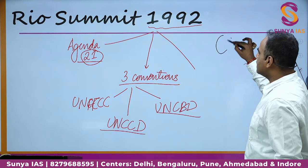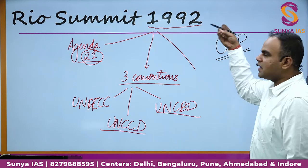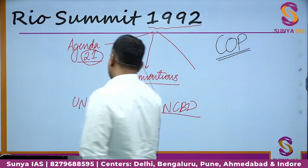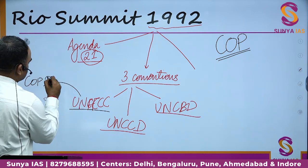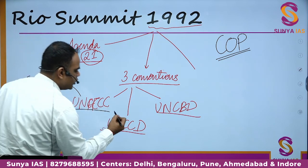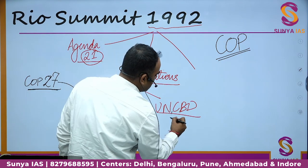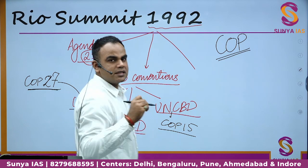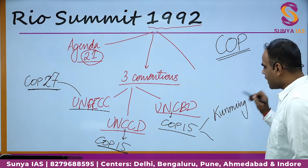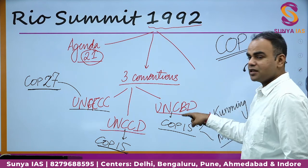Many of you have heard the term COP, which simply means Conference of Parties. When I say COP27, your mind should ask: COP of what? COP27 refers to UNFCCC, and it happened in Sharm el-Sheikh, Egypt. In UNCCD, the most recent COP is COP15, which happened in Abidjan, Africa. In CBD, you also had COP15, but do not get confused — this happened virtually in Kunming, China, and then in Montreal. So the Kunming-Montreal Biodiversity Framework is related to COP15 of CBD.